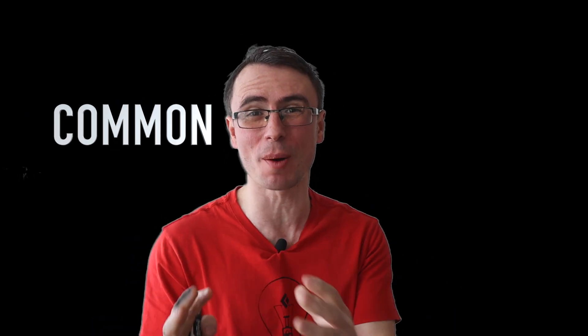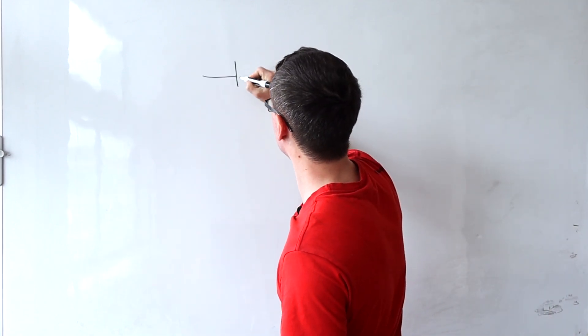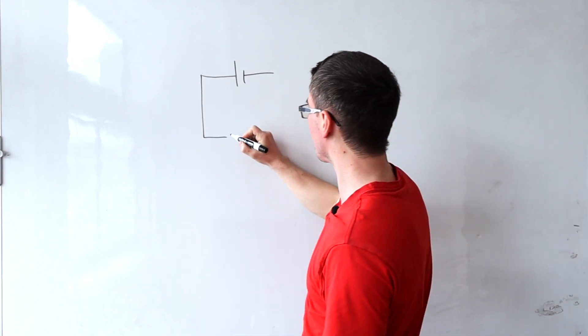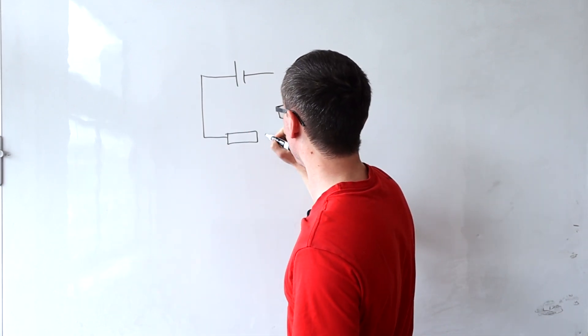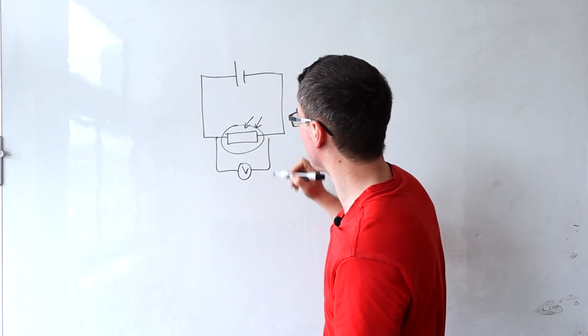There is a type of question in A-level physics which is an extremely common mistake. So let's have an electrical circuit like so, and we'll connect this to an LDR. We'll also have a voltmeter across here.